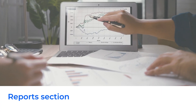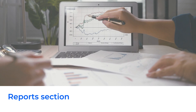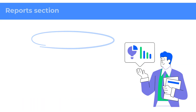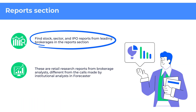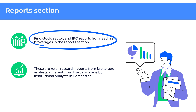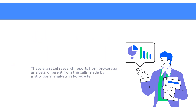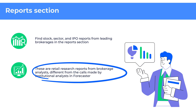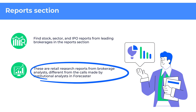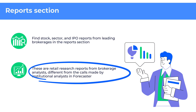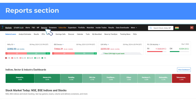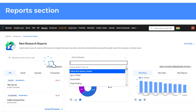Next, let's see how you can access the Report section. As a Trendline user and subscriber, you can find stock, sector, and IPO reports from leading brokerages in the Report section. Note that these are retail research reports from brokerage analysts, different from calls made by institutional analysts and Forecaster. To access the Report section, simply click on Reports in the top navigation bar. Here you can search for reports by stock using the search bar.